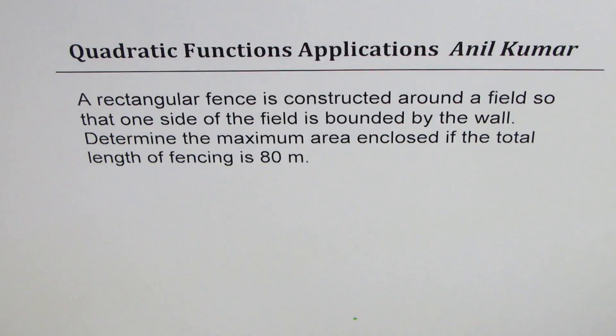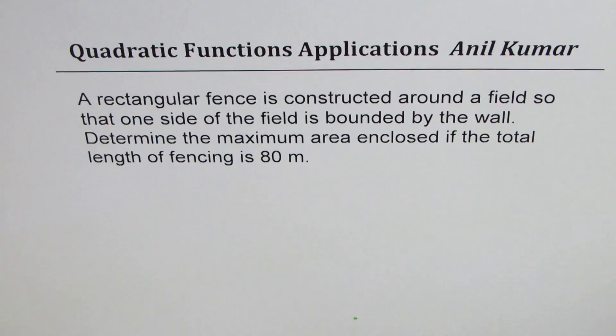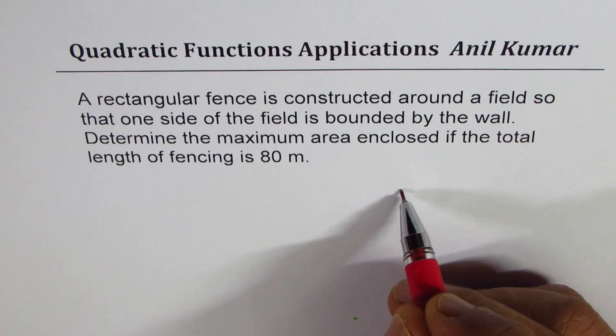I'm Anil Kumar, sharing with you a few questions related to maximum and minimum. The question here is: a rectangular fence is constructed around a field so that one side of the field is bounded by the wall. Determine the maximum area enclosed if the total length of fencing is 80 meters.